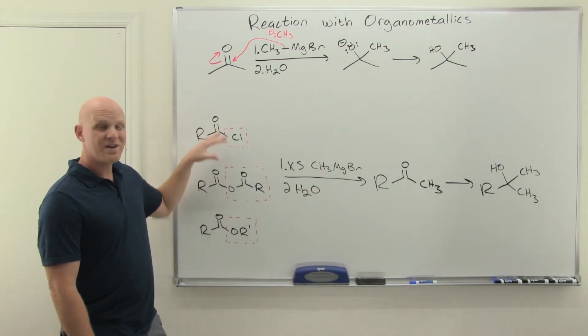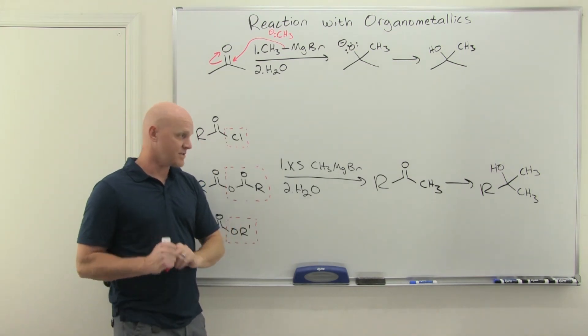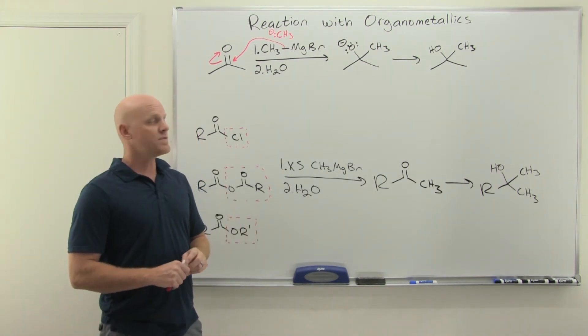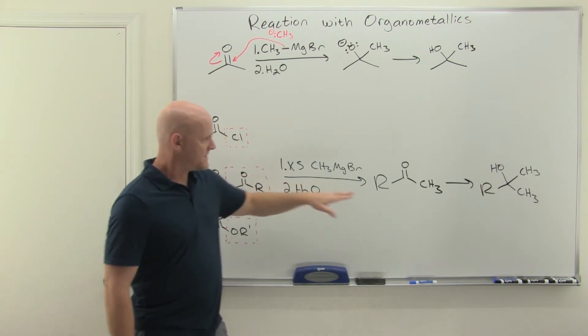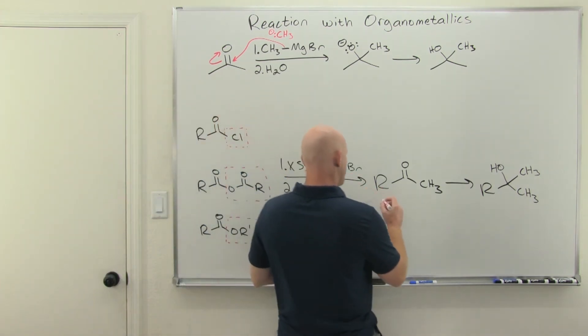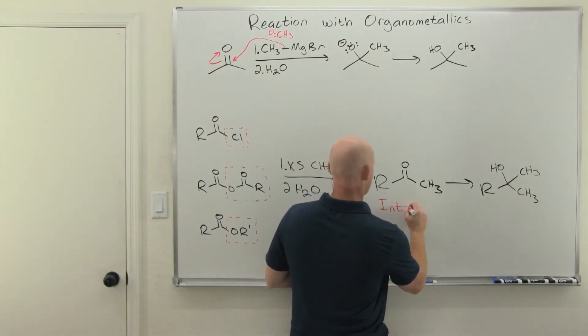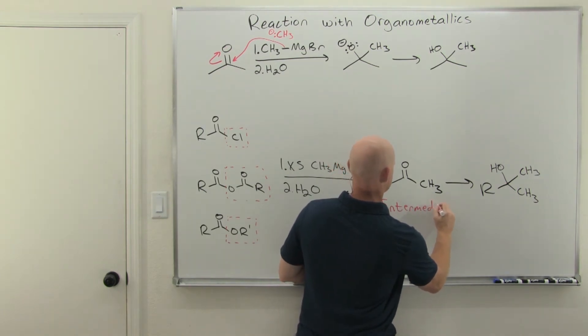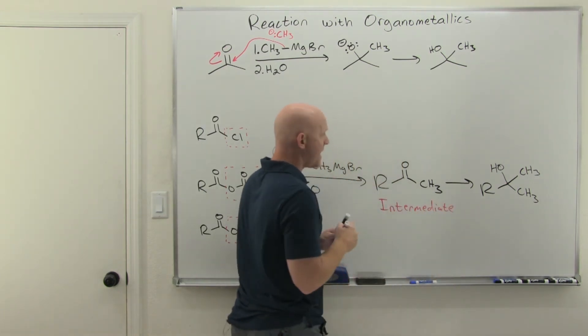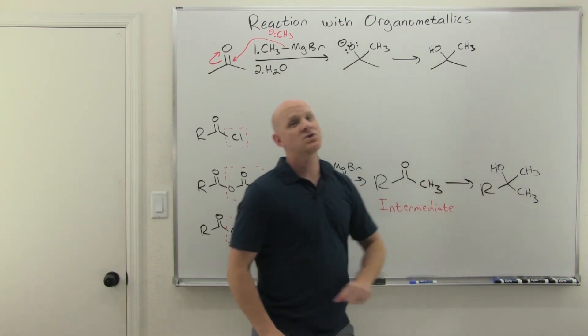We don't necessarily have that issue here, but a lot of books aren't going to present it, and I'm not going to present it either. So because we have another way of pulling that off, as we'll see with the Gilman reagent. So in this case, our ketone here is just an intermediate along the way, but your product here would be this tertiary alcohol.